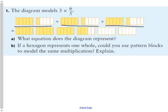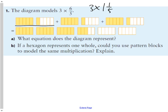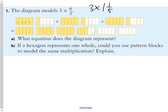There are one, two, three groups of six-fifths. Each of those groups is six-fifths. Another way to say that is three times one and one-fifth — they're both the same thing, because six-fifths and one and one-fifth are equivalent. So when I ask three times six-fifths, I want to count how many fifths I have in total: one, two, three... all the way to eighteen fifths. So three times six-fifths equals eighteen-fifths.